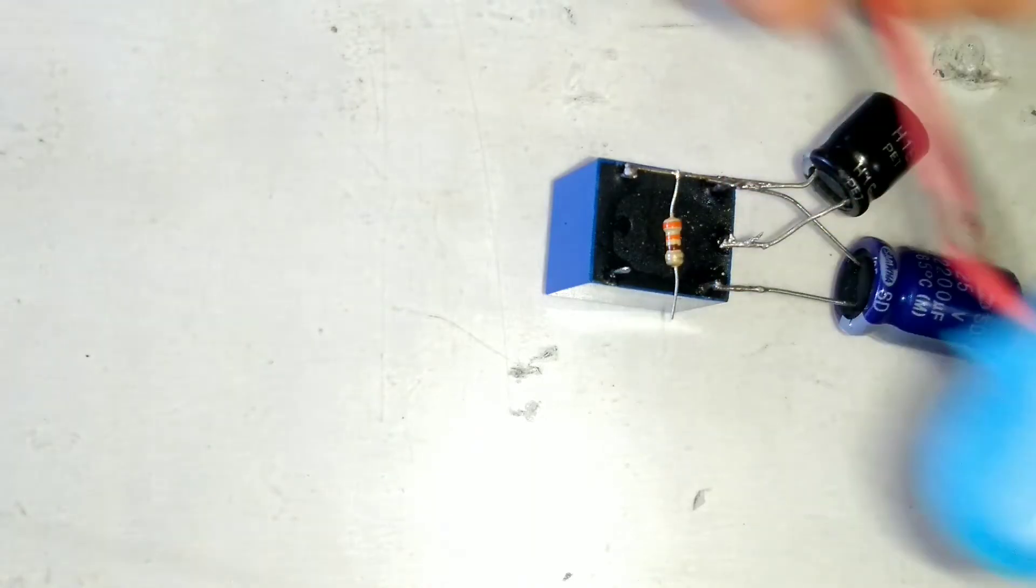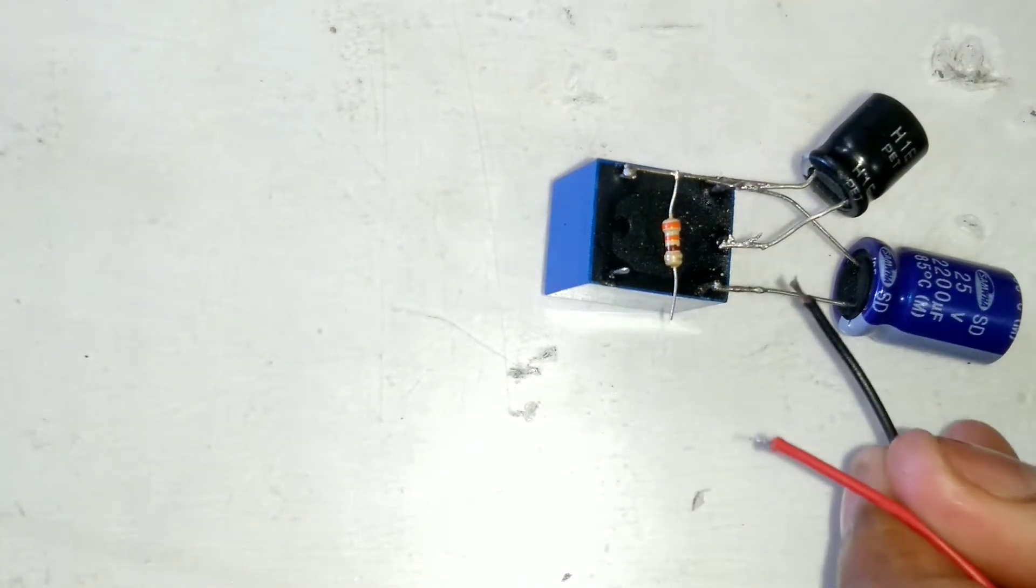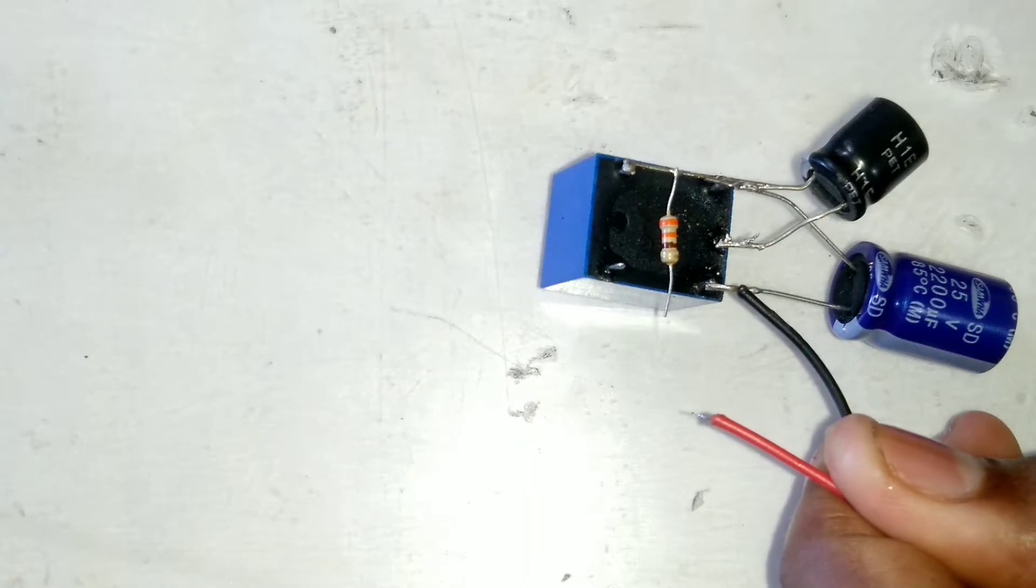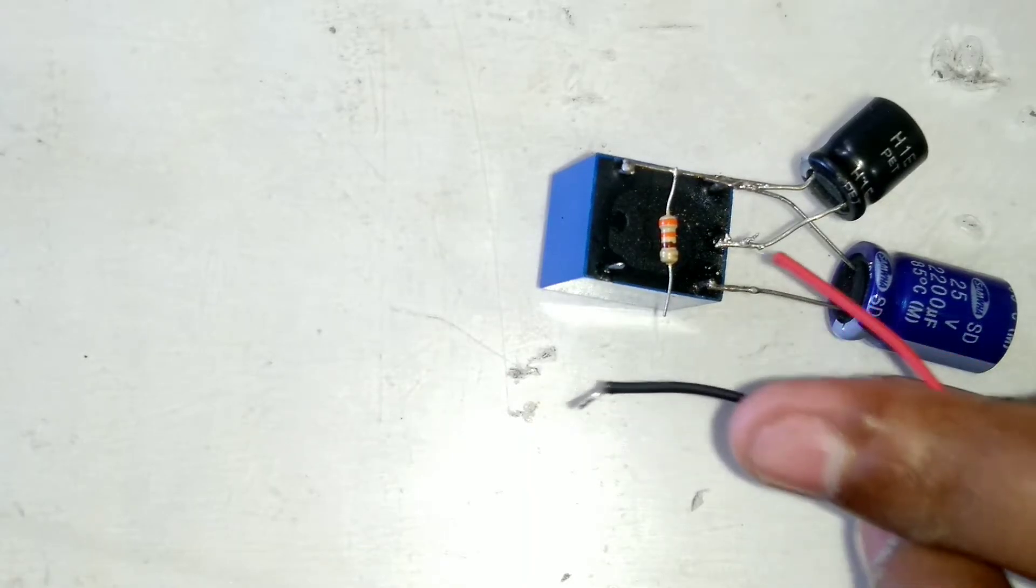We have a battery cap. The battery cap negative goes to Coil Number 2, and positive goes to the common pin.